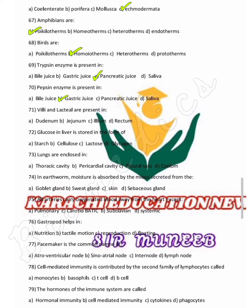In the small intestine, there are finger-like projections called lacteals, which are lymphatic vessels. If we have to choose one option, we will choose jejunum because it is the largest part of the small intestine. Lacteals are present throughout the small intestine, but here we are selecting jejunum.